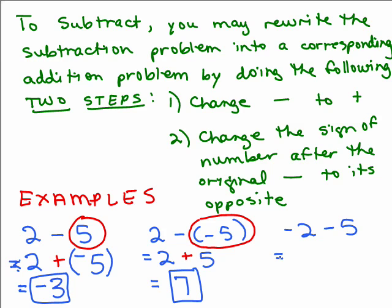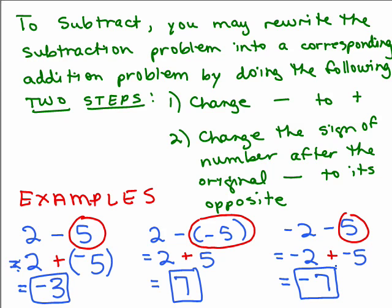Now let's look at negative 2 minus 5. This is very similar to the first example, except instead of positive 2, it's negative 2. You still change the minus sign to a plus, and take the opposite of positive 5, which is negative 5. Now you've got a negative plus a negative — you get a bunch of negatives, and 2 plus 5 is 7, so the answer is negative 7. Notice these problems all involve 2s and 5s but give different answers because they're not all the same.